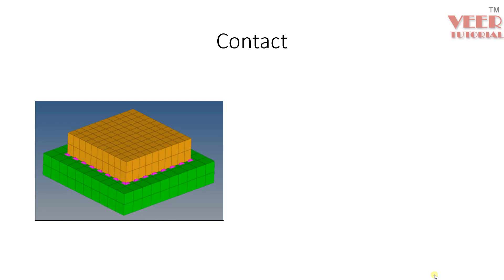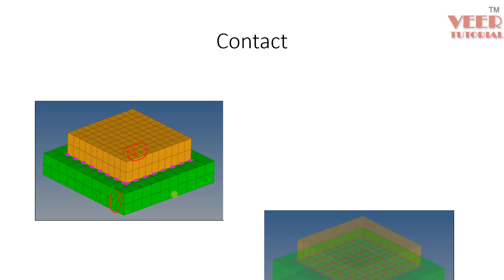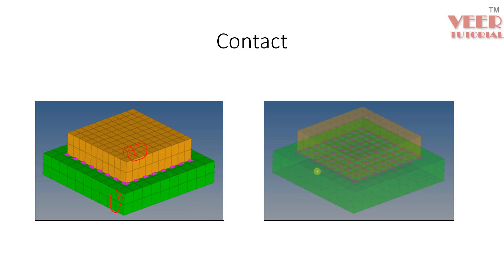For example, let's say we have these two plates — plate 1 and plate 2. Plate 2 is placed on plate 1, so these two plates are touching each other. Whenever two bodies are in contact or touching each other, we need to apply the contact between them. For each body, we create a contact surface pair and then between these two contact surface pairs, we apply the contact.